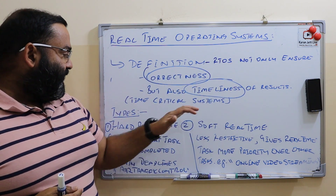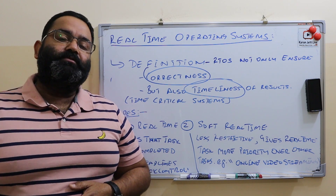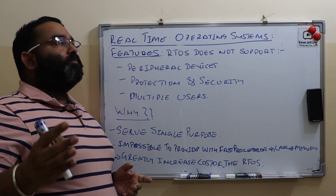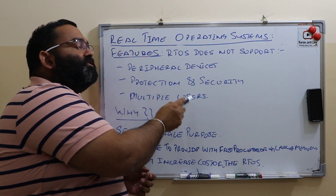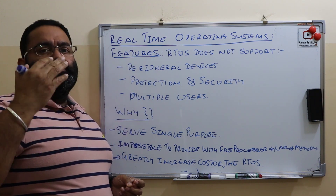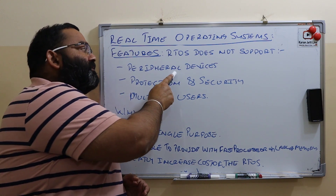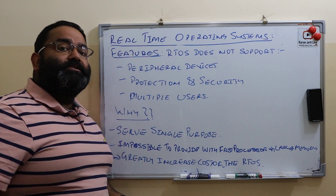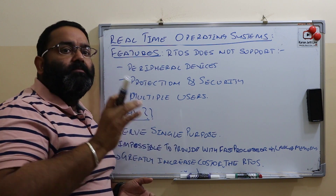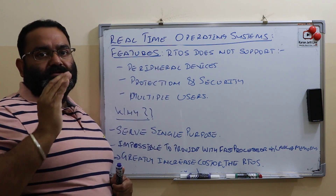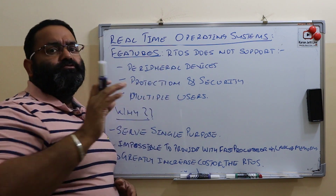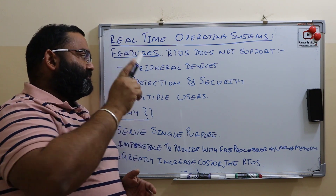Now we will proceed to the features of real-time operating systems. Unlike traditional operating systems, real-time operating systems do not support peripheral devices like keyboards, CD-ROMs, magnetic disks, and tapes — they do not support a large variety of input-output devices. This is because real-time operating systems are designed for a single, specific purpose, not like traditional operating systems which can do multiple tasks.